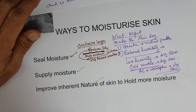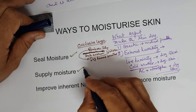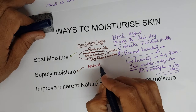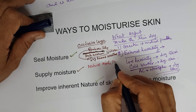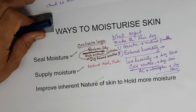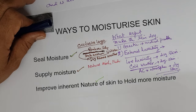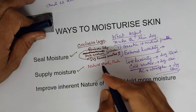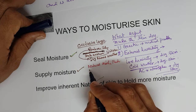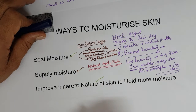The second way is to supply moisture through natural moisturizing factors. You can build into the formulation glycerin, hyaluronic acid, and sodium lactate — all of which have the potential to absorb moisture from the atmosphere. One of the best natural moisturizers is aloe gel; it contains polysaccharides that absorb moisture from the atmosphere and keep the skin moisturized.